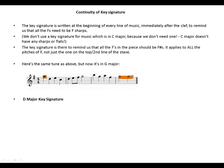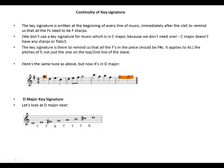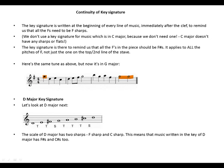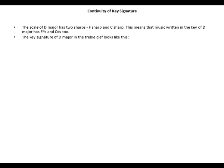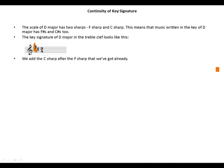D major key signature: the scale of D major has two sharps — F sharp and C sharp. This means that music written in the key of D major has both F sharp and C sharp. The key signature of D major in the treble clef looks like this: we have two sharps, F sharp and C sharp. We add the C sharp after the F sharp.